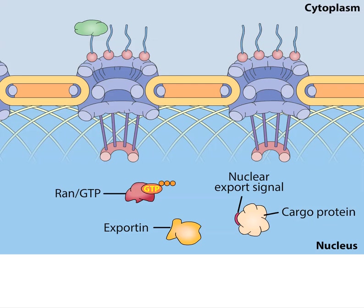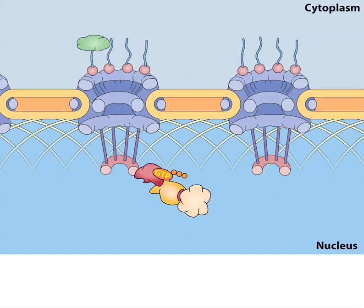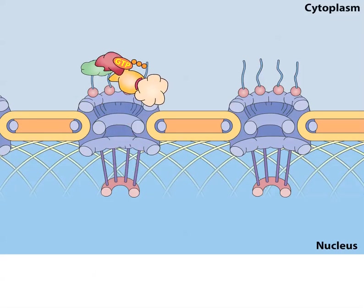RAN-GTP promotes the formation of stable complexes between exportins and their cargo proteins. Note that this same form of RAN does the opposite for importins and their cargoes. The effect of RAN-GTP binding on exportins dictates the movement of proteins containing nuclear export signals from the nucleus to the cytoplasm.